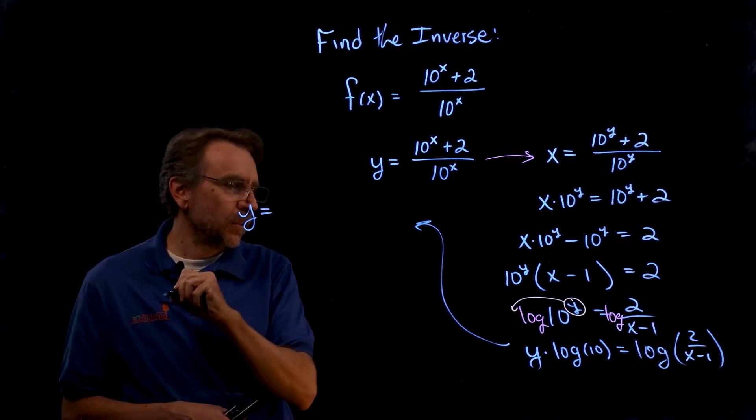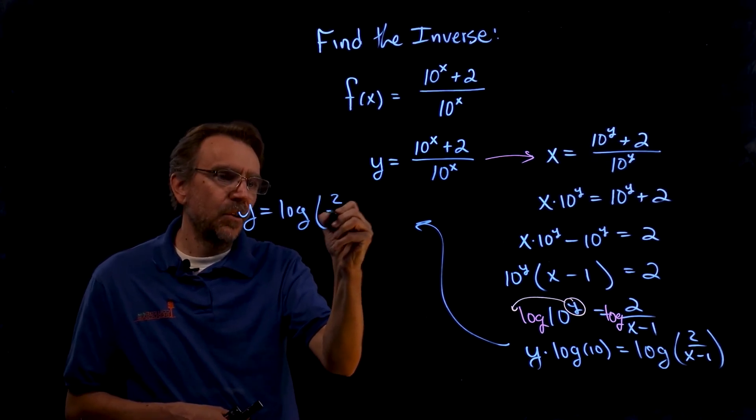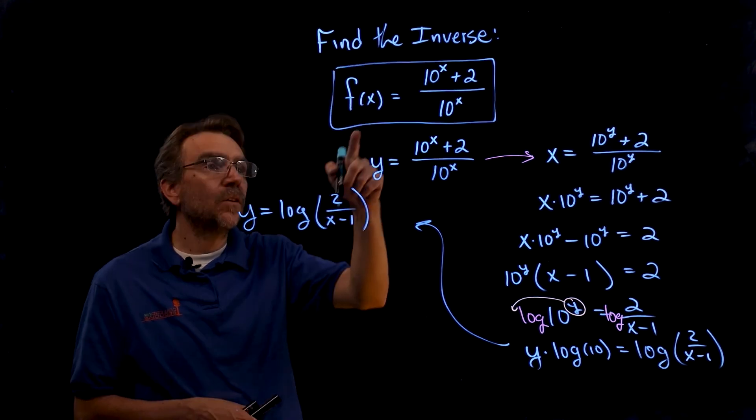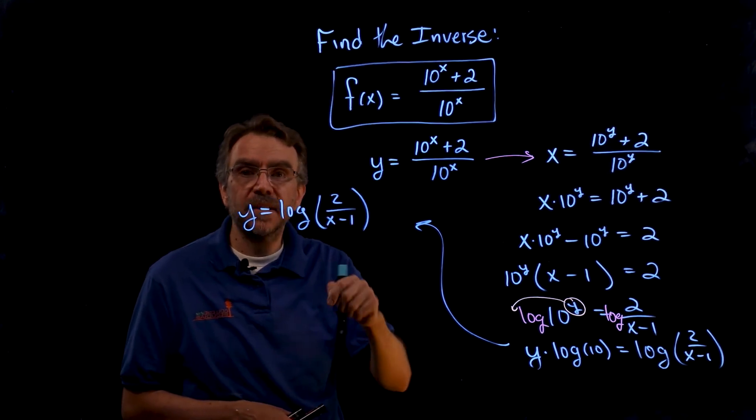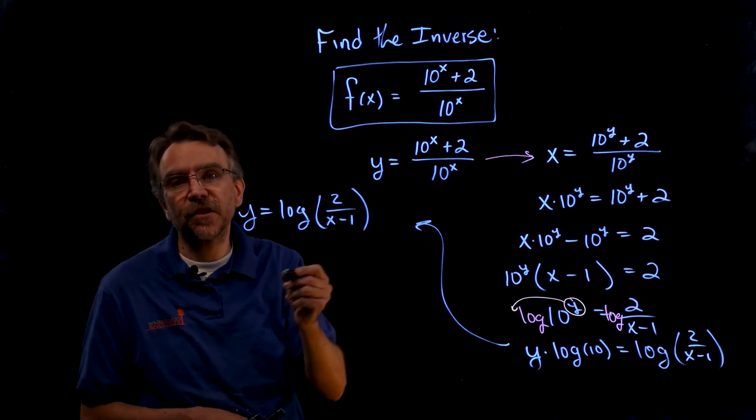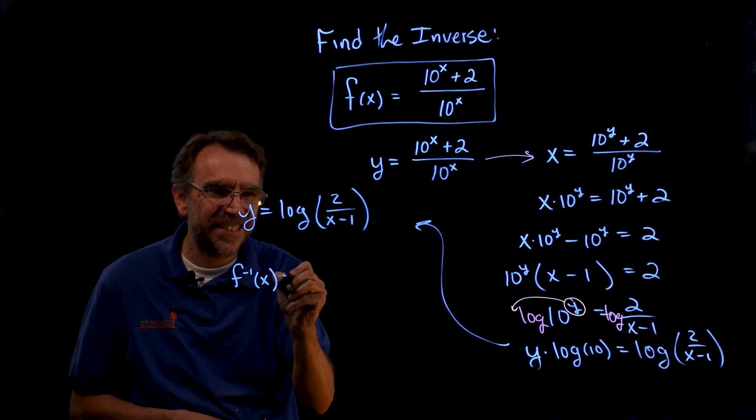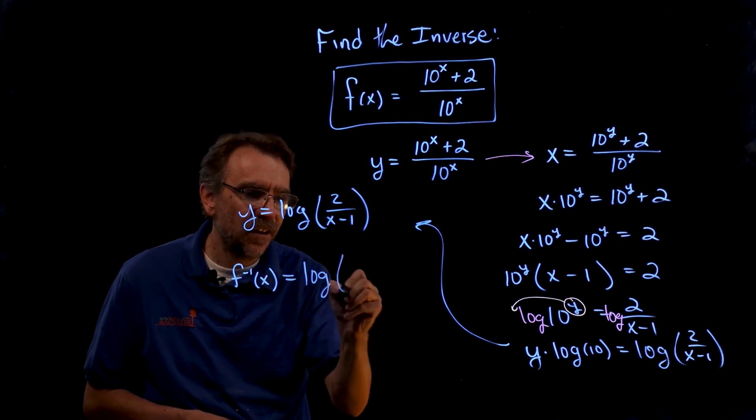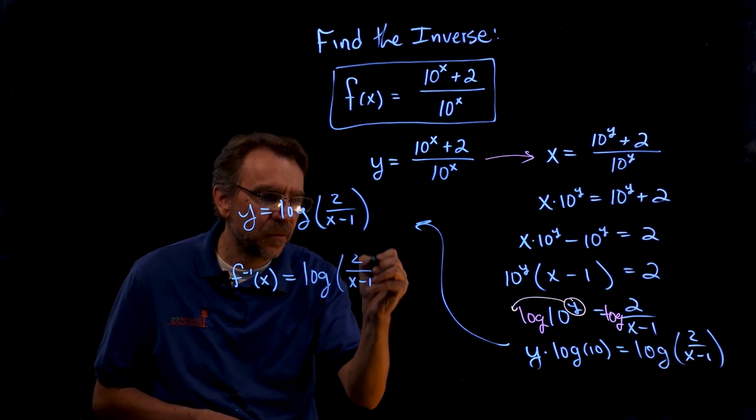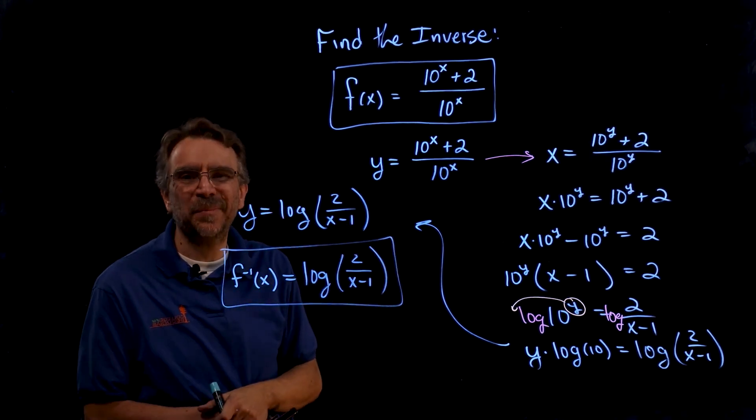All right, we have y equals log 2 over x minus 1. The goal was to find the inverse of this and there it is. So the last step is to bring back the function notation. So instead of y, we'll write f inverse of x equals log of 2 over x minus 1. And that's our answer. That's the inverse of the original exponential.